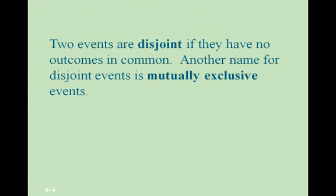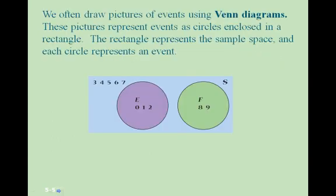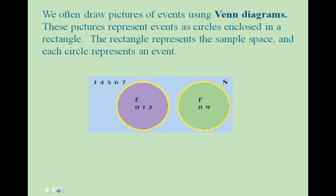Two events are disjoint if they have no outcomes in common. Another name for disjoint events is mutually exclusive events. We often draw pictures of events using Venn diagrams, which represent events as circles enclosed in a rectangle. The rectangle represents the sample space, and each circle represents an event.